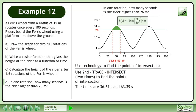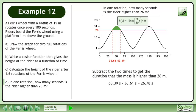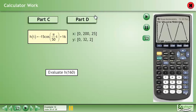Use second trace intersect two times to find the points of intersection. The times are 36.61 seconds and 63.39 seconds. Subtract the two times to get the duration that the rider is higher than 26 meters. 63.39 seconds minus 36.61 seconds equals 26.78 seconds, which is the answer.